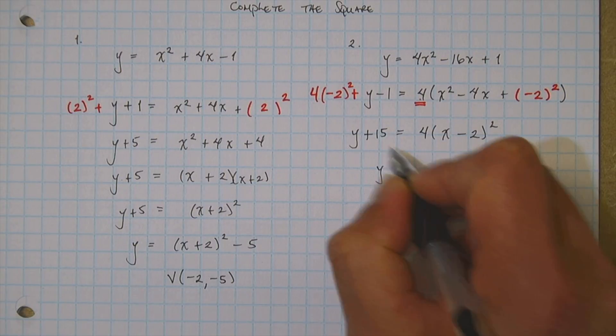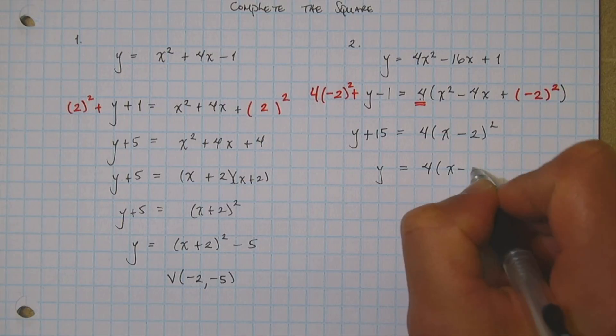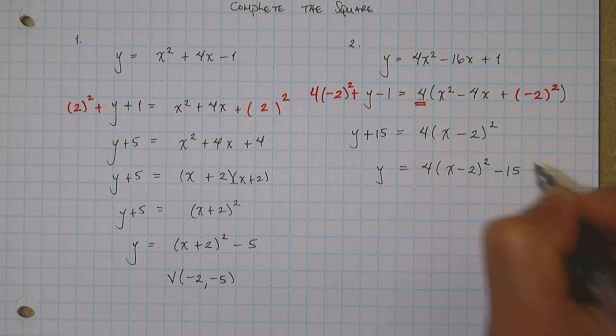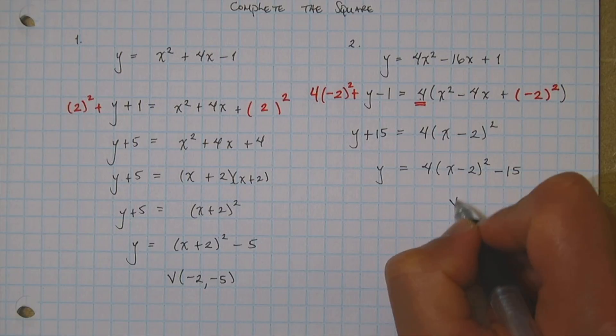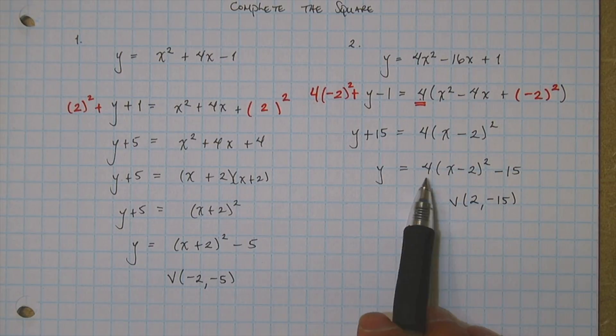So then that, bring the plus 15 over to the right, 4, x minus 2 quantity squared, minus 15. And there it is. This guy has a vertex at positive 2, comma negative 15. And it's going to be a multiplier of 4. That means it's going to be a narrow parabola.